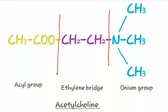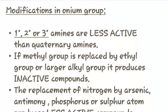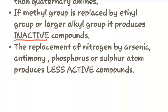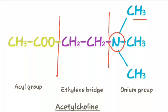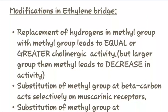Let us study about the modifications in the onium group, that is the quaternary amine group. Primary, secondary, or tertiary amines are less active than quaternary amines. If the methyl group is replaced by an ethyl group or larger alkyl group, it produces inactive compounds. The replacement of nitrogen by arsenic, antimony, phosphorus, or sulfur atom produces less active compounds.